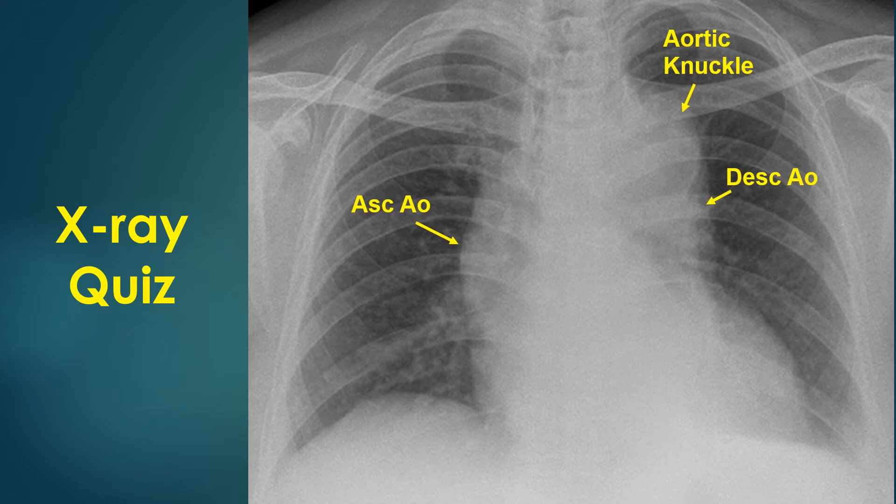CT aortogram can confirm the diagnosis of aortic dissection and delineate the extent of dissection to decide on management. A bedside echocardiogram may also show the aortic dissection flap in the ascending aorta if the echo window is good. Echocardiogram is usually considered first because of easy availability in the emergency setting.